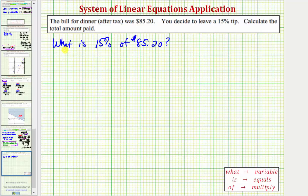So notice how the first word we see is what, which represents the unknown. So let's use t for the tip amount. And then we have is, which means equals. We want to write the percent as a decimal. 15% as a decimal is equal to 0.15.